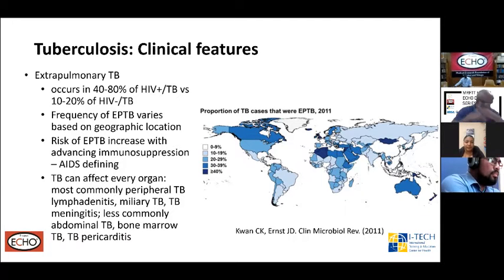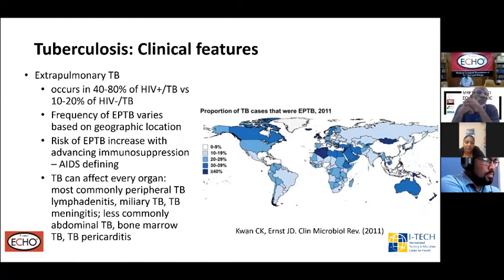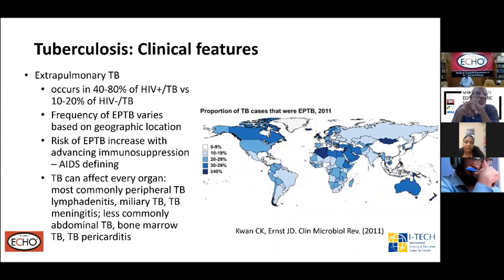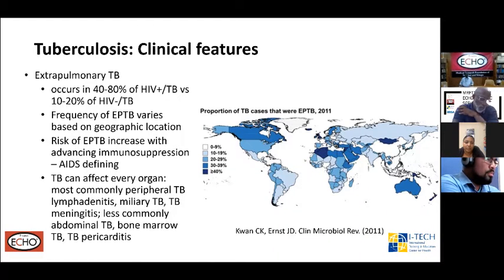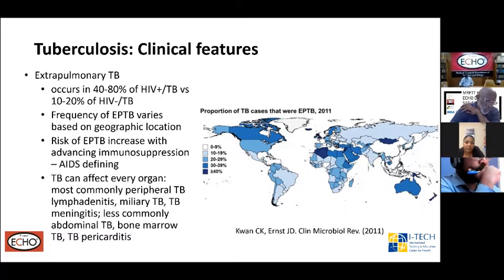TB can affect practically every organ. The most common sites we tend to see are peripheral lymphadenitis, mediastinitis, miliary TB, and TB meningitis. Less commonly seen are abdominal TB, bone marrow TB as part of a disseminated picture, and TB pericarditis.